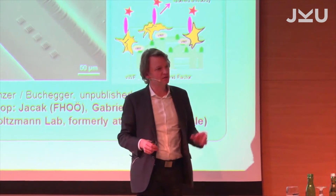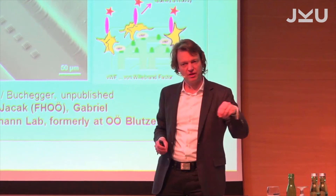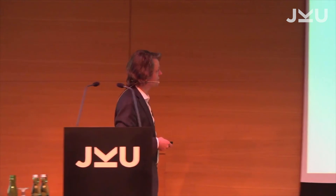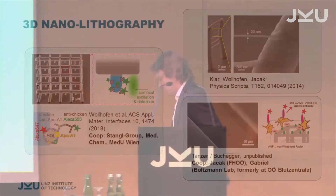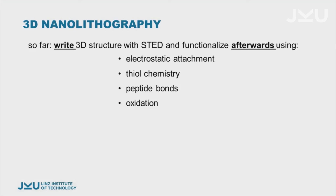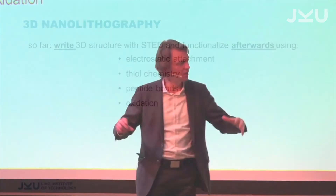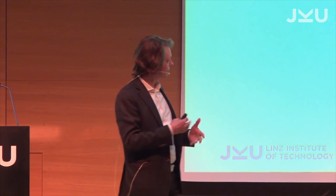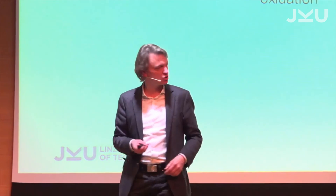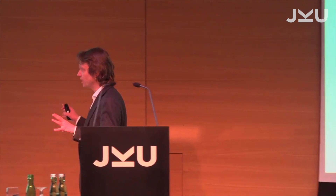Another example: we also had this in a flow cell, where we make molecular fishing — fishing out molecules to make an immunoassay. But lithography is just a very small part of more general photochemistry. We also wrote three-dimensional structures and used electrostatic attachment afterwards, thiol chemistry to attach fluorophores or proteins, peptide bonds, and oxidation steps. But the real holy grail would be to use directly stimulated emission switching for photochemistry — that's what we are after in our LIT project.